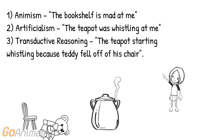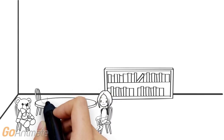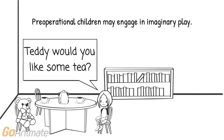Transductive reasoning is believing that two events are related when in reality they are not. For example, a child might believe a teapot started steaming because right before it started steaming, a doll fell off a chair. Children in the preoperational stage may engage in imaginary play — they may have tea parties with their stuffed animals, talk to them, and imagine that they're talking back.